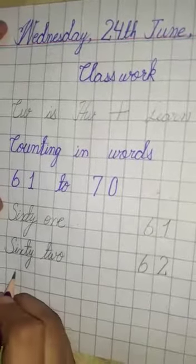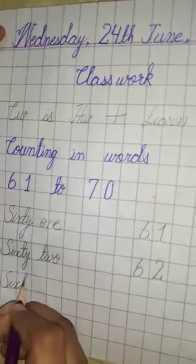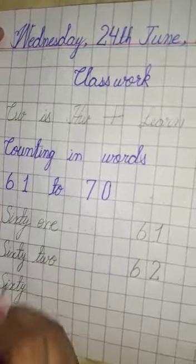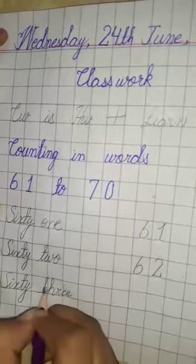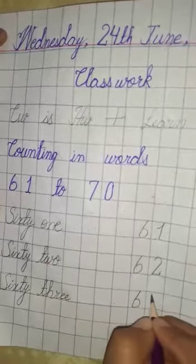Sixty-three - S, I, X, T, Y, sixty, T, H, R, E, three. Sixty-three.